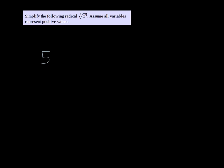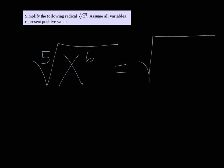Alright, here we're simplifying the radical — it's the fifth root of x to the sixth power. We can break up x to the sixth power to be x to the fifth times x to the first. Because when you multiply the bases, you add the exponents: 5 plus 1 would be 6.